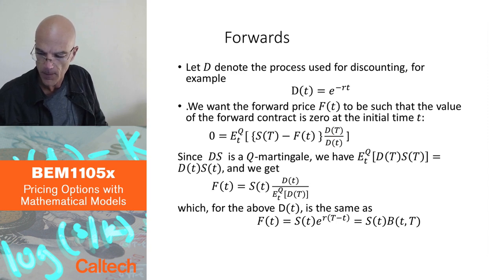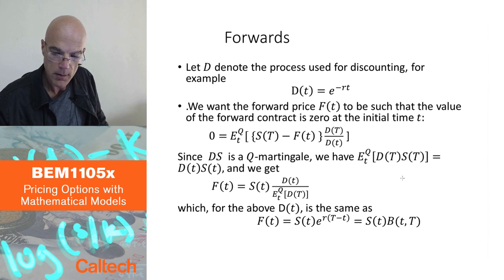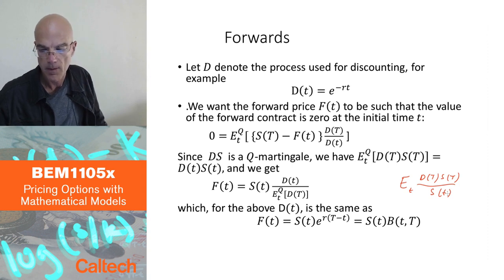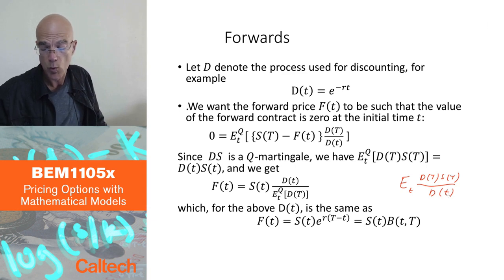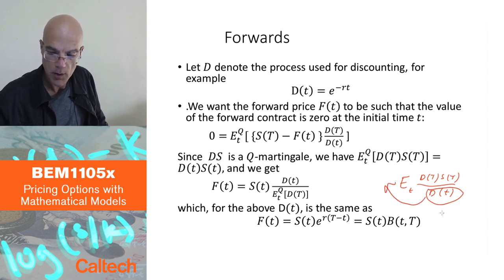So I'm first computing, maybe I should write here, I'm first computing expectation at t of D(T)S(T) over d(t). Now this guy is known at time t, so it can go out. It's constant at time t, so it's known. So I'm going to have one over d(t) expectation at t under Q, everything is under Q, of d of capital T and s of capital T, discounted underlying.